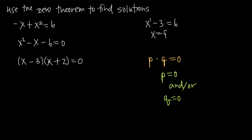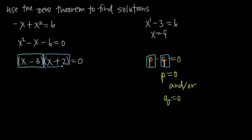If we multiply this back out, we get x squared plus two x minus three x, which is minus one x, and then negative three times positive two gives us negative six. So we've factored this correctly. Now all we need to realize is that we have p times q, and by factoring we've put our equation in the form p times q equals zero.